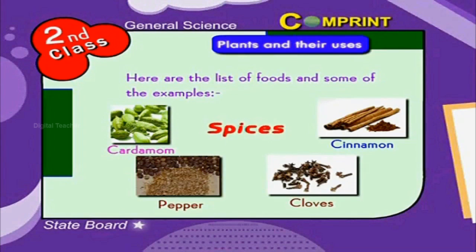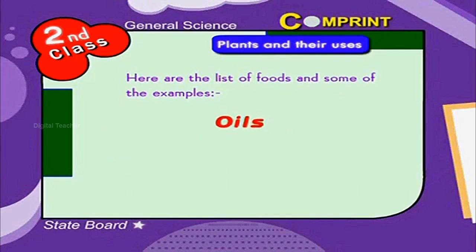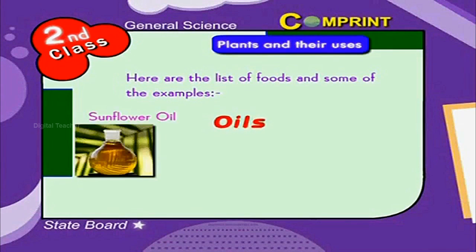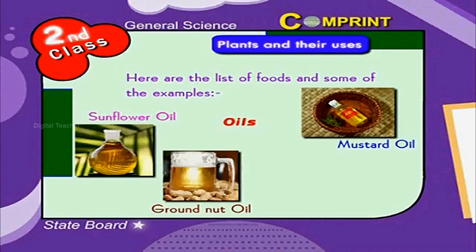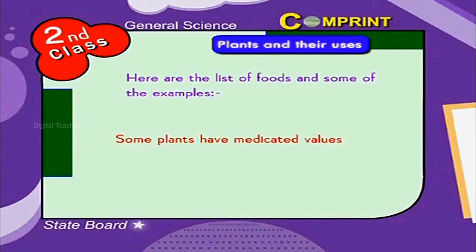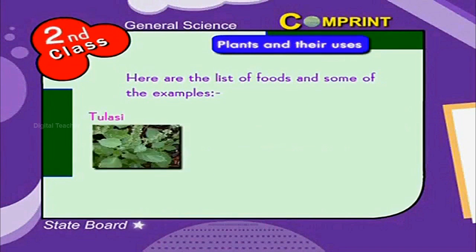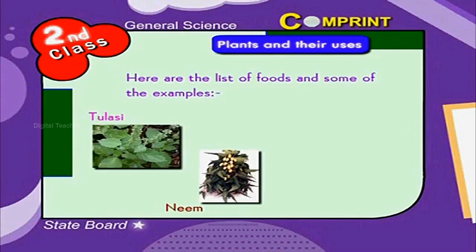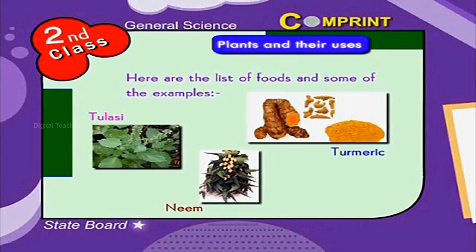We get many types of spices like cardamom, cinnamon, pepper and cloves. They add flavor to our food. We get oil from seeds of plants by grinding, like sunflower oil, mustard oil, groundnut oil, palm oil and so on. Some plants have medicinal values like tulsi, neem, turmeric and cloves.